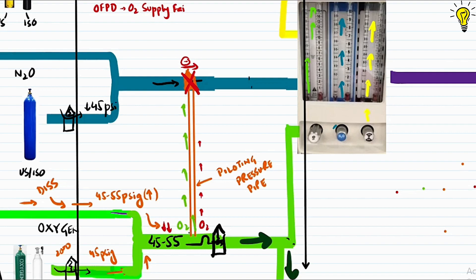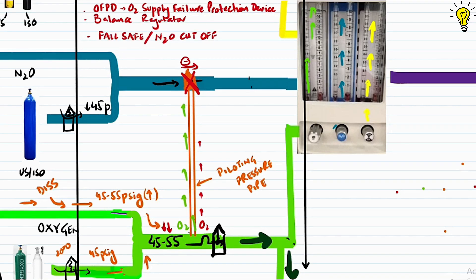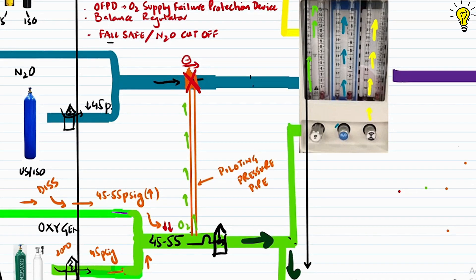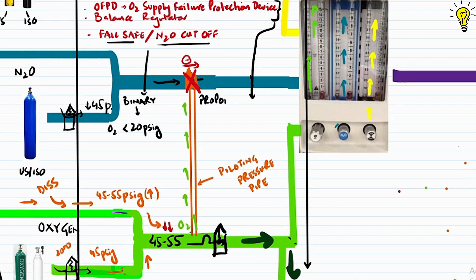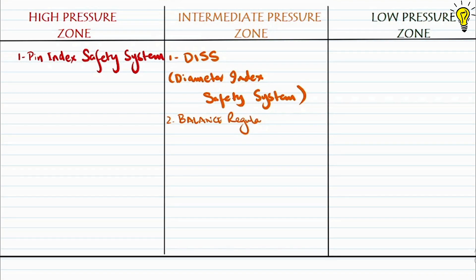In newer machines, this is called the Oxygen Supply Failure Protection Device (OSFPD) or balance regulator, depending on the model and company. In older machines it is called the fail-safe or nitrous cutoff. The difference is that the older fail-safe is binary — it completely shuts off the valve once oxygen pressure falls below 20 psig. The newer balance regulator is a proportioning device that gradually and proportionately reduces nitrous oxide as oxygen pressure drops, until it finally completely shuts off nitrous at oxygen pressures as low as 0.5 psig.